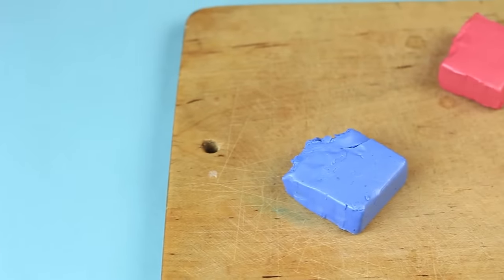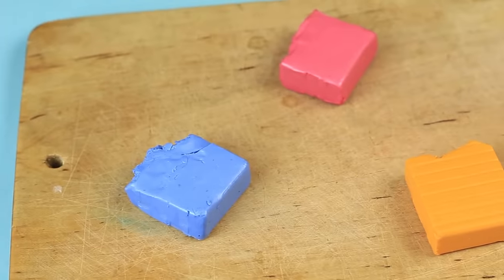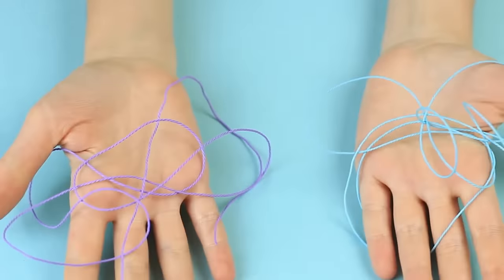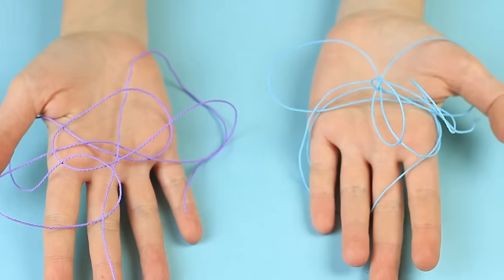Let's make a fingerprint necklace. We'll need polymer clay of blue, pink, and ochre color. Two thin silk cords of lavender lilac and blue shades.